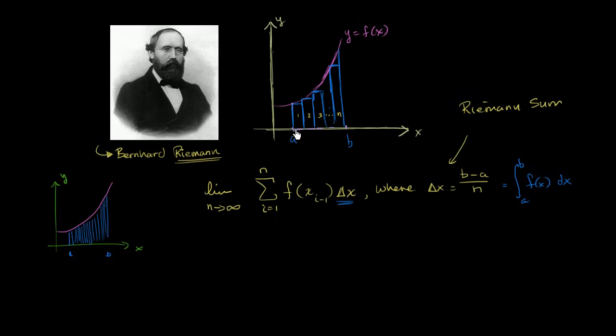delta x was the distance for each of these, was the width for each of these sections. This right here is delta x, so that is a delta x. This is another delta x, this is another delta x. Though a reasonable way to conceptualize what dx is, or what a differential is, is what delta x approaches if it becomes infinitely small.